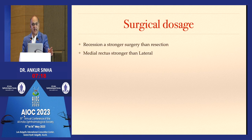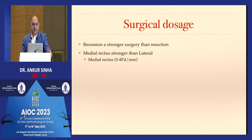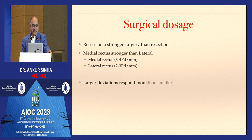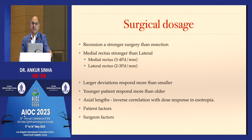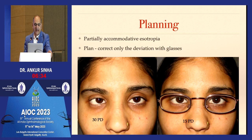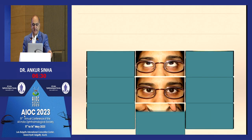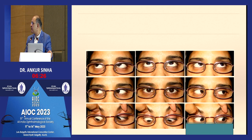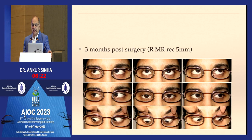Surgical dosage: recession is a stronger surgery than resection. Medial recti give 3–4 prism diopters per millimeter of surgery; lateral recti give 2–3 prism diopters. Larger deviations respond more; younger patients respond more. In exotropia there is an inverse correlation with dose response compared to esotropia. Case example: partially accommodative esotropia with 30 prism diopters without glasses and 50 with glasses — we correct only the deviation with glasses. No A/V pattern or oblique overaction: right medial rectus recession by 5 mm achieved a good result.